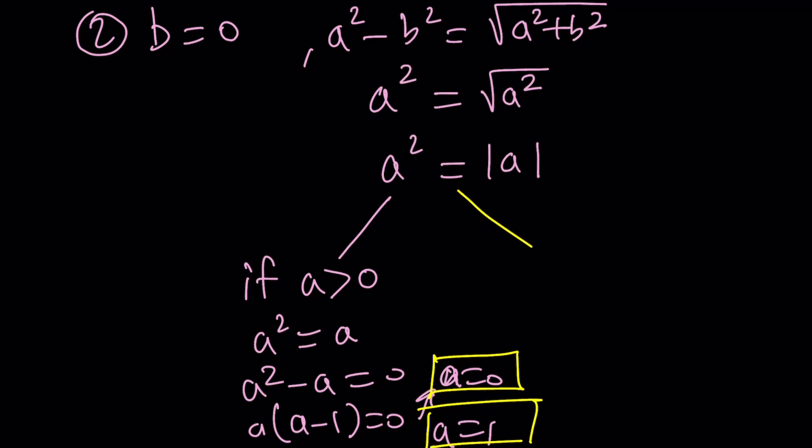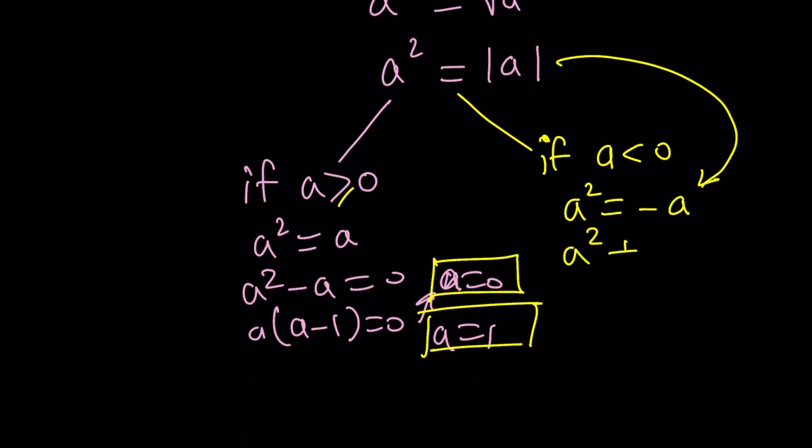With the second case, if a is less than zero, by the way, I didn't include a equals zero, but I could probably just put a little equal sign there. Now, if a is less than zero, then a squared is going to equal negative a, because that's what the absolute value equals. And then that's going to give me a squared plus a equals zero, which means a times a plus one equals zero. A equals zero is not going to work because a must be less than zero. This means a is negative one is the only solution. And that's actually less than zero. So that'll count. Let's put together what we have.